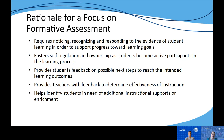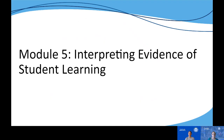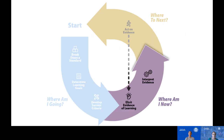Now let's take a closer look at this new module and how it will help us in interpreting meaningful evidence. At the heart of the formative assessment process, it is about empowering students to be able to answer three critical questions: Where am I going? Where am I now? And where to next? Module 5 is focused on interpreting evidence of student learning, and as students work to interpret evidence of their learning, it helps them address that question of where am I now in relation to the intended learning outcomes, so that they and the teacher can use that information to inform their next steps.